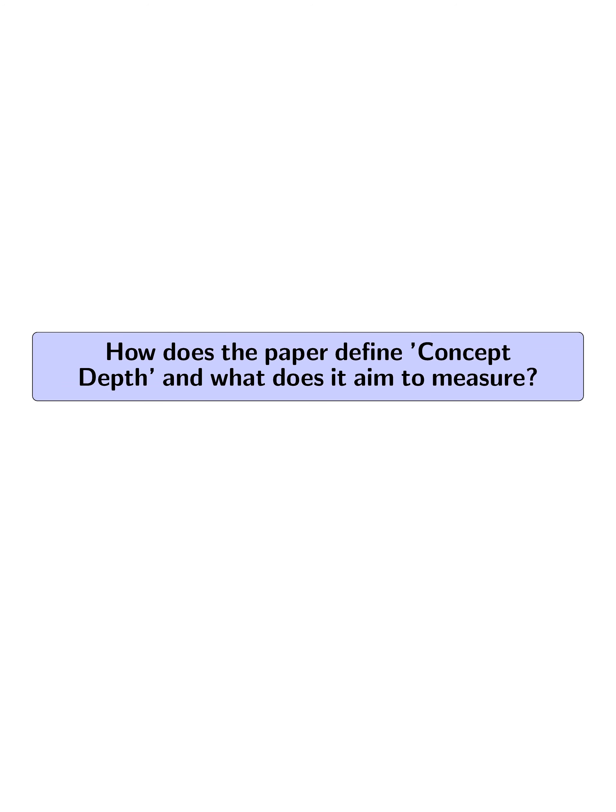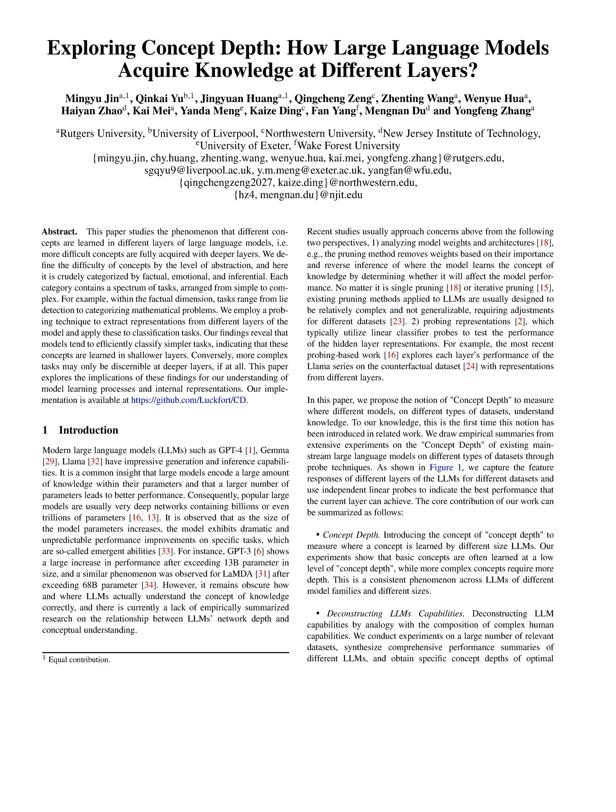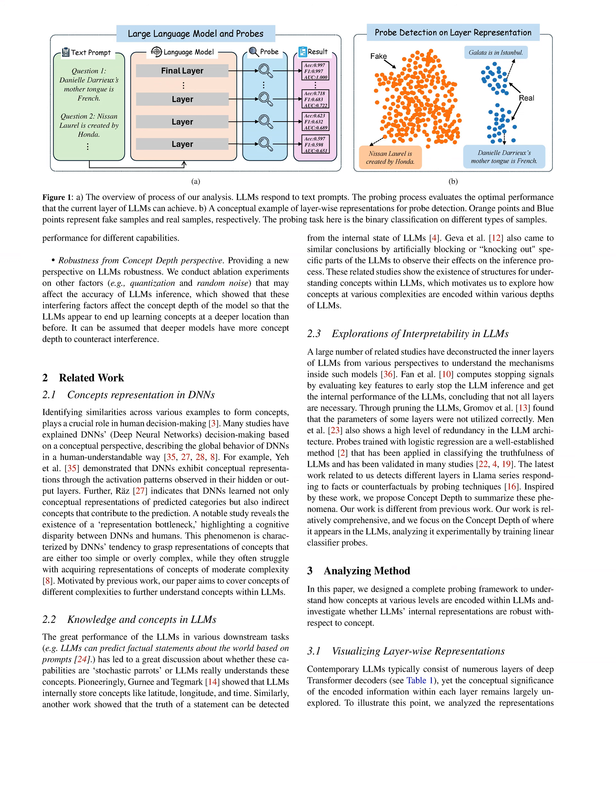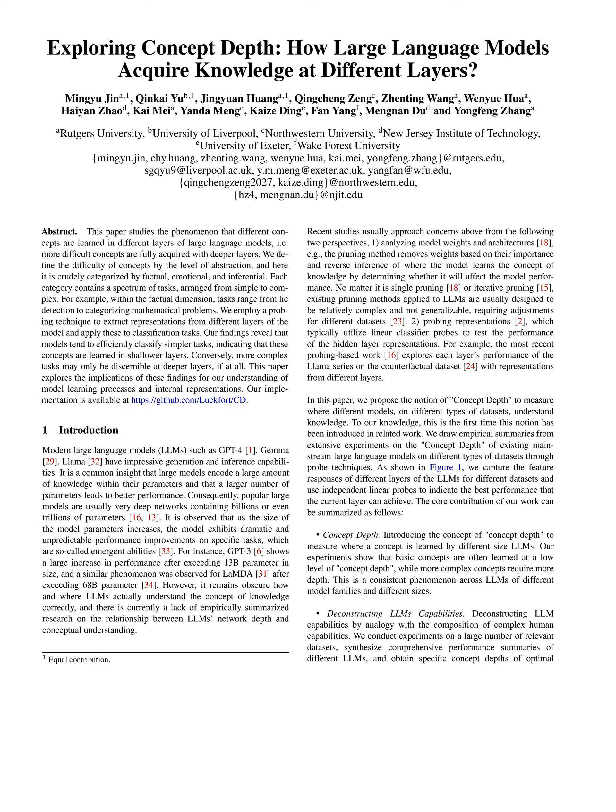How does the paper define concept depth and what does it aim to measure? The paper defines concept depth as a measure of where different LLMs understand knowledge at various levels within their network depths. It aims to measure the depth at which different models on different types of datasets comprehend concepts. The concept depth indicates where basic concepts are typically learned at lower levels of the network, while more complex concepts require deeper layers.